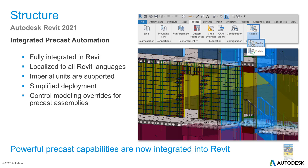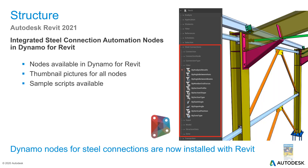For those working with precast, precast automation has been integrated and is localized to specific Revit languages with imperial units available. Deployment has been simplified and model overriding controls for precast assemblies are enabled. For Dynamo users, steel connection automation nodes have been integrated, with thumbnails for node previews and sample scripts to explore.